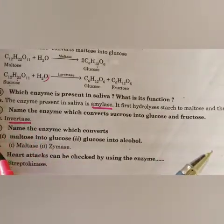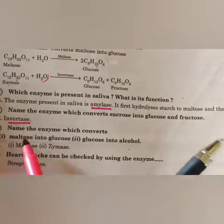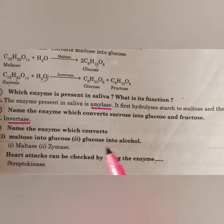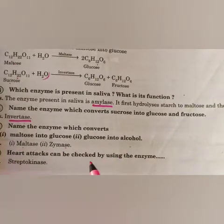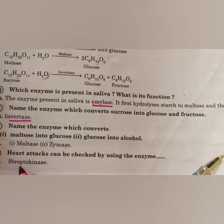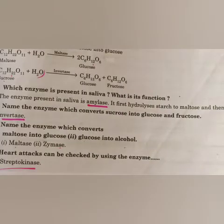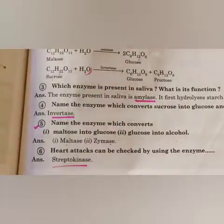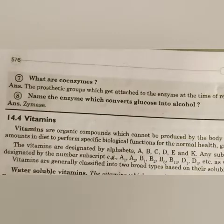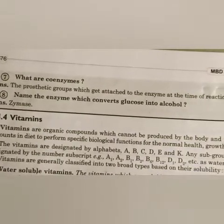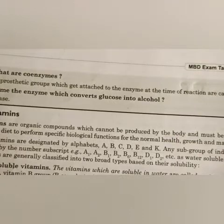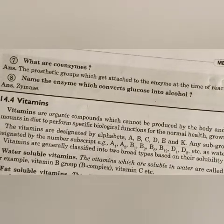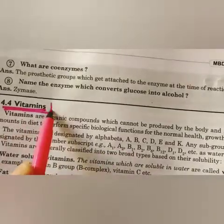These are important one-mark questions: the enzyme that converts maltose into glucose is maltase; glucose into alcohol is zymase. Heart attacks can be checked using the enzyme streptokinase — very important. Coenzymes are prosthetic groups which get attached to the enzyme at the time of reaction.